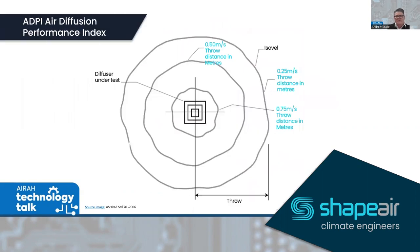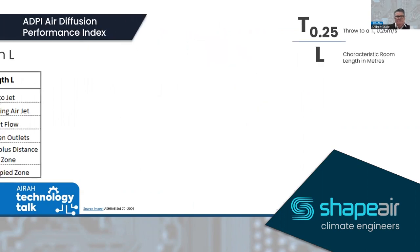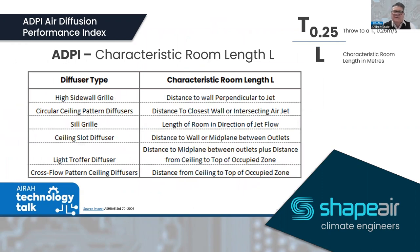For a radial outlet, measurement is done on a radial basis. Remember the formula: T to 0.25 m/s as a throw value divided by L (the characteristic room length). The characteristic room lengths include: for sidewall registers the distance to the wall perpendicular to the jet; for circular or radial diffusers the distance to the closest wall or intersecting jet; and values for sill, slot, light air troffers, and cross-flow pattern diffusers.